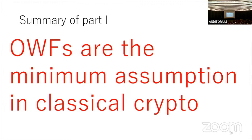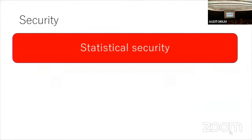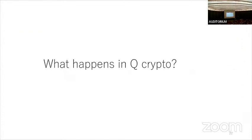Let's move on to the second part of my talk, the main body. I start by reviewing this new world. In cryptography, we have two securities: statistical security and computational security. The question is what happens in quantum cryptography — not just post-quantum or quantum-resistant classical crypto, but genuine quantum work, where we can do quantum computation and use quantum communication.